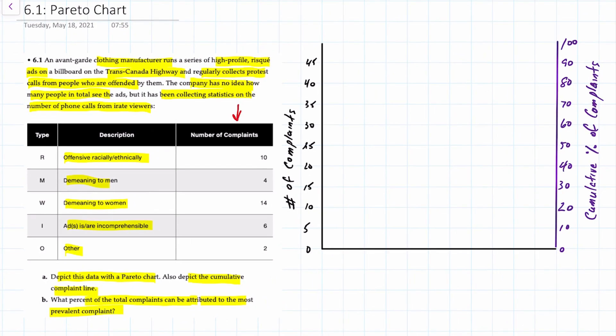So I've taken the liberty of creating a blank graph in advance. On the left we have our y-axis that indicates the number of complaints and I've selected a scale from 0 to 50. And on the right I've also included another scale for the cumulative percentage of complaints that ranges from 0% all the way to 100%.